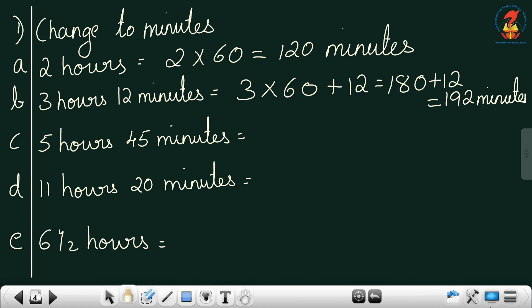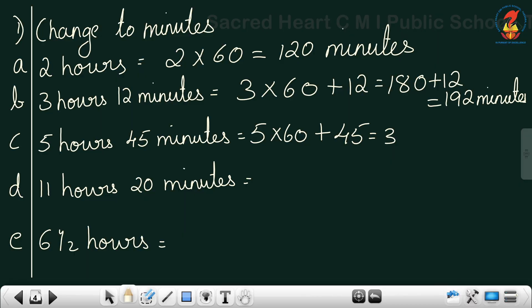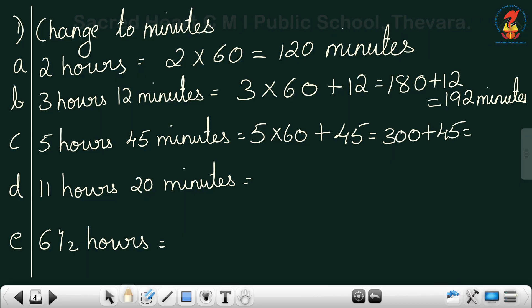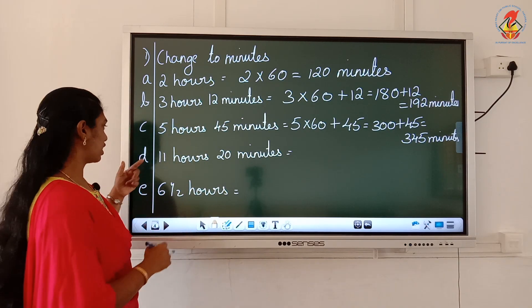Next: 5 hours 45 minutes. You convert 5 hours: 5 into 60 plus 45 minutes. 5 into 6 is 30, put a zero — so 300 plus 45. The answer is 345 minutes. Question D is homework for you.